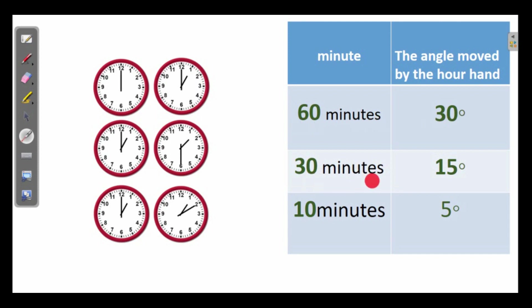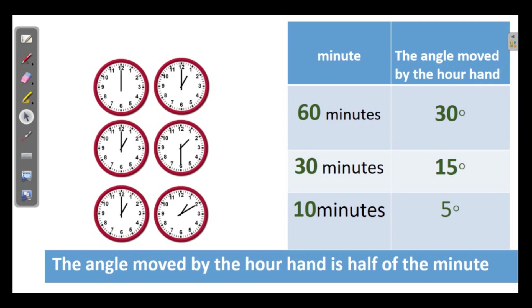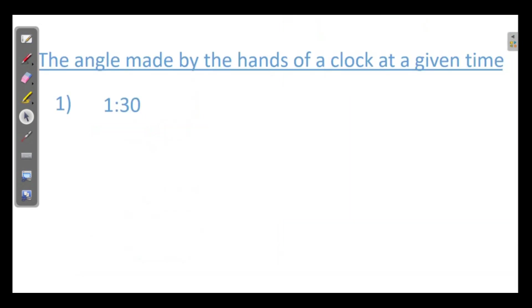30 minutes 15 degrees, and in 1 minute half a degree. So in 10 minutes 5 degrees. So here remember this: the angle moved by the hour hand is half of the minute. Remembering it you can do the problems very easily.